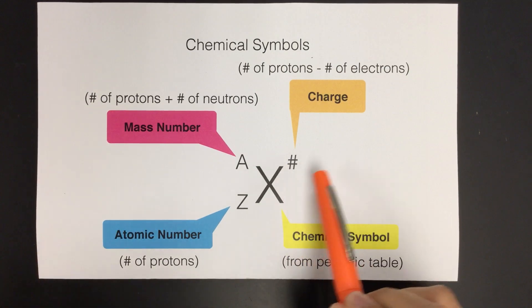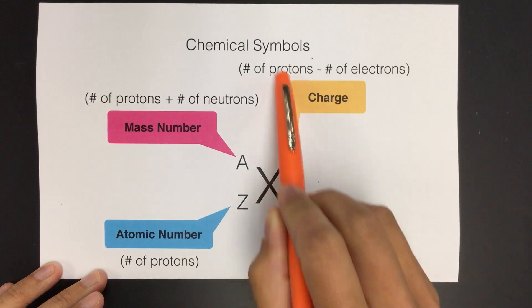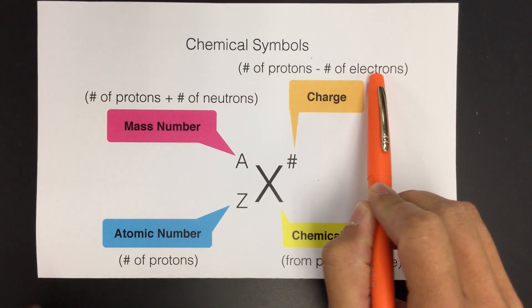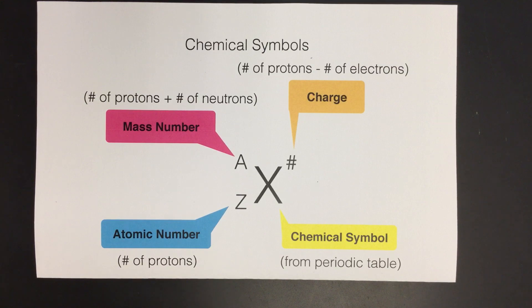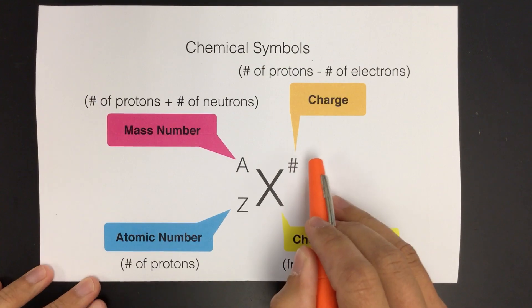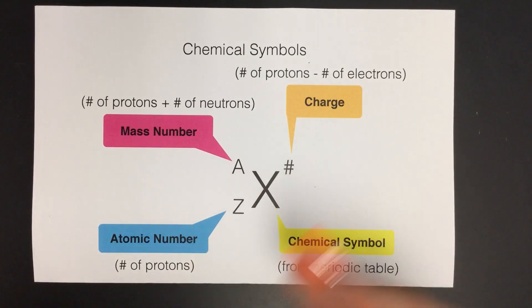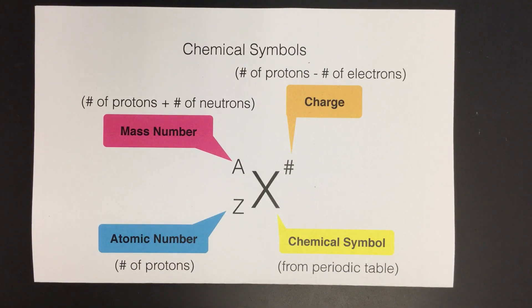It could be that you have a number in the top right, which would indicate a charge. I'm going to not use the formula — I'll explain how I like to figure out the charge if there is one. Another thing to keep in mind: if you are not given information to figure out a charge, you always want to assume that the element is neutral. We'll go through a few examples where it does and does not have a charge so you can see that.